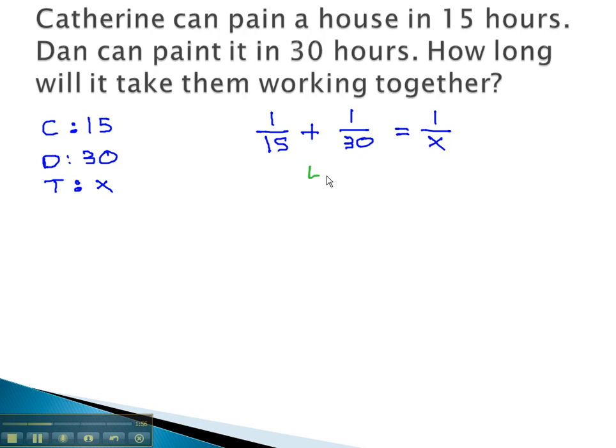This is a rational equation which we can solve by using the least common denominator. 15 and 30 will give us 30, and we also need a factor of x. So we'll multiply each term by 30x.